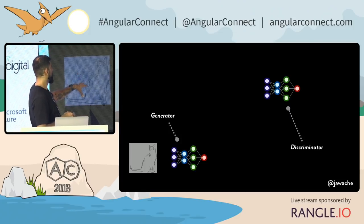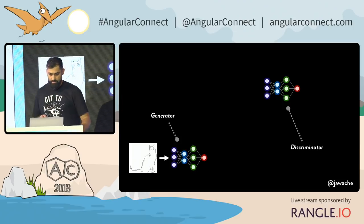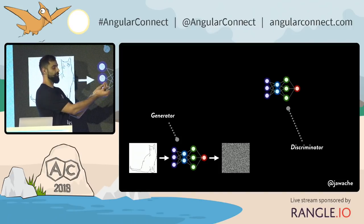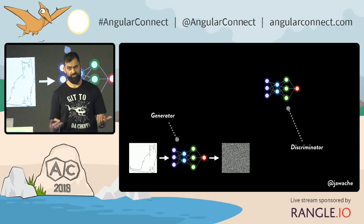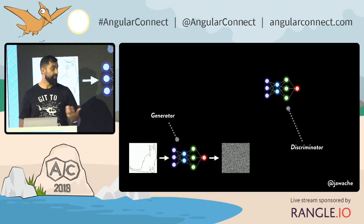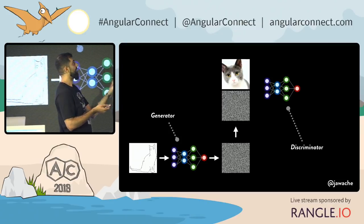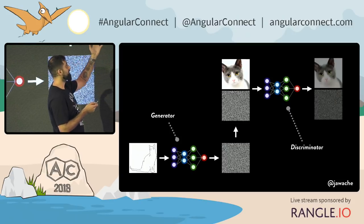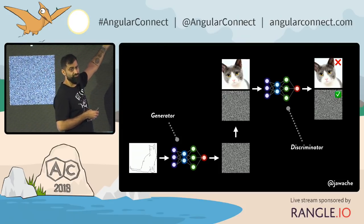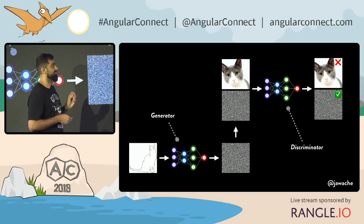The generator's job is: for a given outline, generate a realistic image of a cat. But initially, the weights are randomised, so it won't do a great job — the very first image it generates will probably just be static. You then pass all those generated cat images to the discriminator, along with real cat images, and the discriminator's job is to decide which is real and which is not.